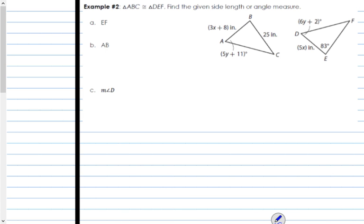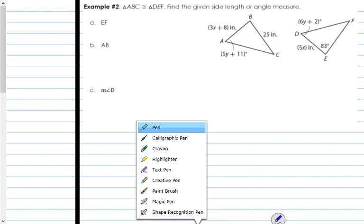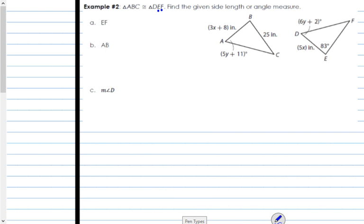Let's look at example 2. Triangle ABC is congruent to triangle DEF. Find the given side length or the angle measure. So we're looking for EF. Now, EF are the second and third letter, so it's congruent to BC. Well, I know that BC is 25 inches. That means EF is also going to be 25 inches. We know that EF is congruent to BC. So since BC is 25 inches, EF is also 25 inches.